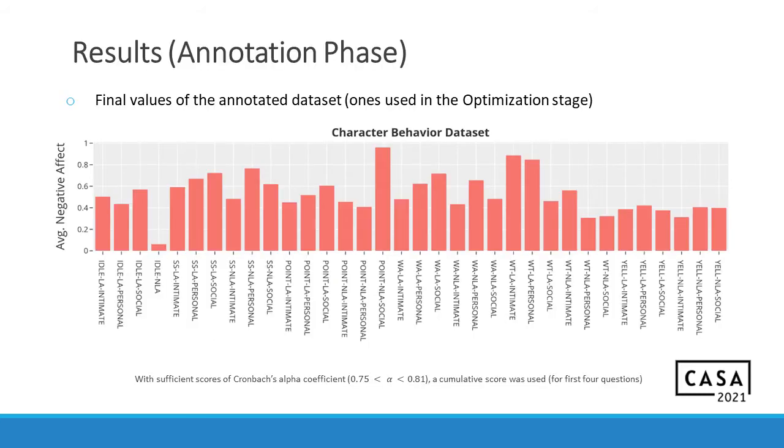Here are the results from the annotation phase. Each of these represent one behavior. And we have ranked them from a scale of 0 to 1. The higher the value, the higher the average negative effect that it produced within the participant. As you can see, there's idle NLA being our base state, which is idle no look at, produced the least negative effect. Because it was technically the user felt that they were not interacting with the crowd.